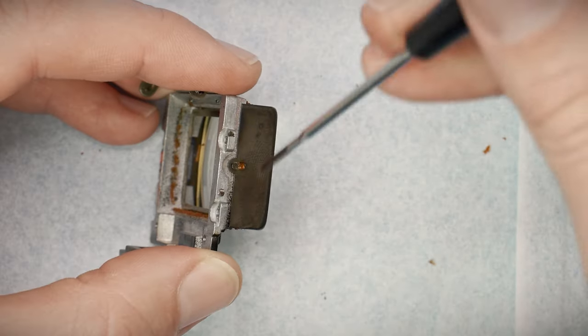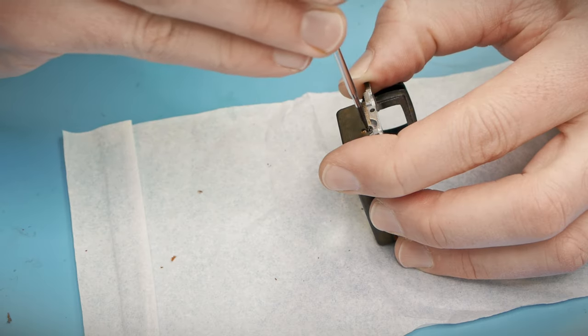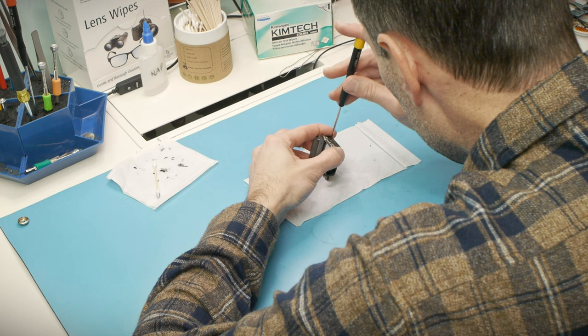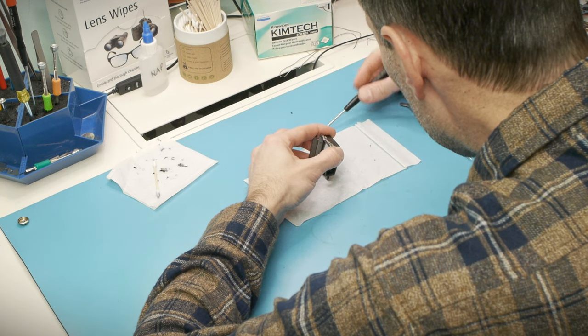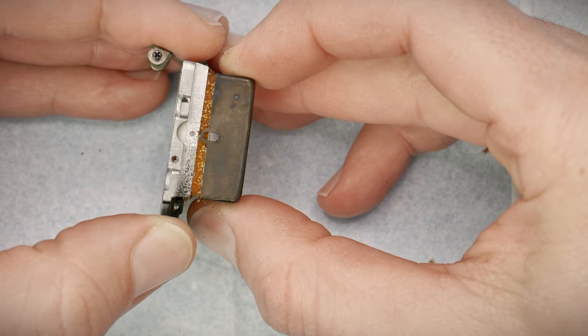To get to the focusing screen, I have to take this metal frame off. There are two little screws that hold it on, and they're so small, it almost looks like the frame could just flex and slip over the top. But it always feels like I'm about to break something whenever I try that. So now I just remove one of the screws.